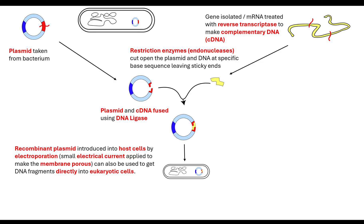We're going to introduce this recombinant plasmid — which is different from the original because we've added in a gene — into a host cell. We introduce it through a process called electroporation. Electroporation is where small electrical currents are applied to make the membrane porous. This can also be used to get a DNA fragment directly into a eukaryotic cell. So the recombinant plasmid — this small circular bit of DNA — is able to be inserted into the bacterial cell.